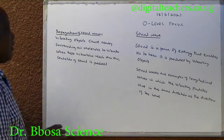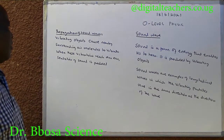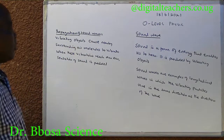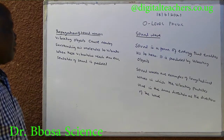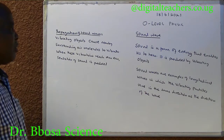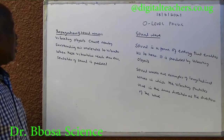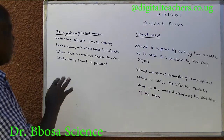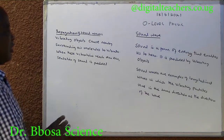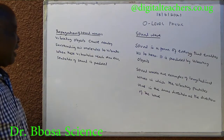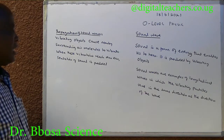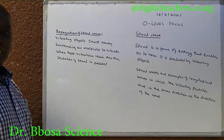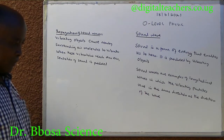Propagation of sound waves. Vibrating objects cause nearby surrounding air molecules to vibrate. When these vibrations reach our ear, a sensation of sound is produced.